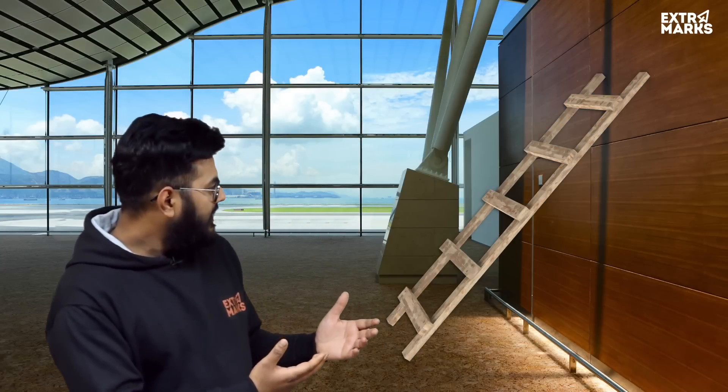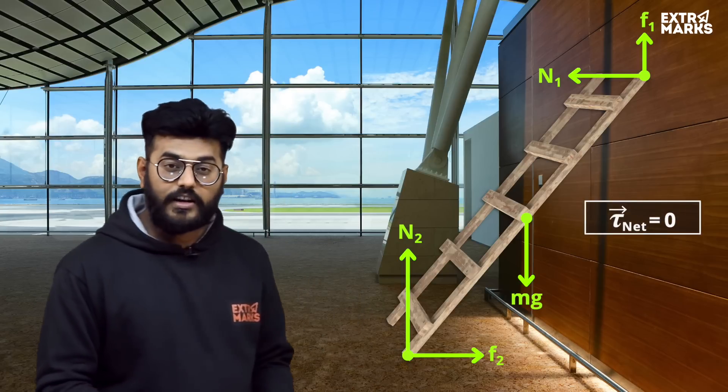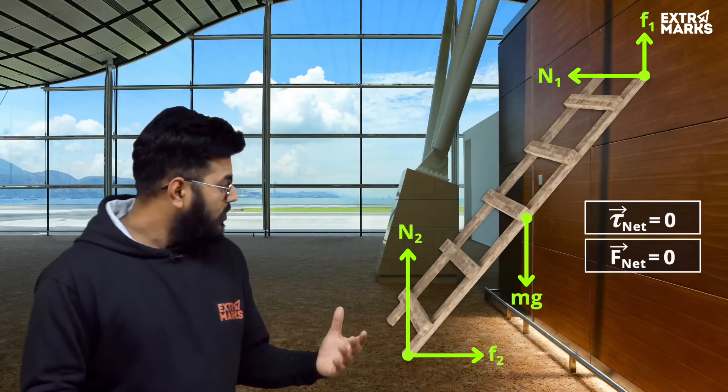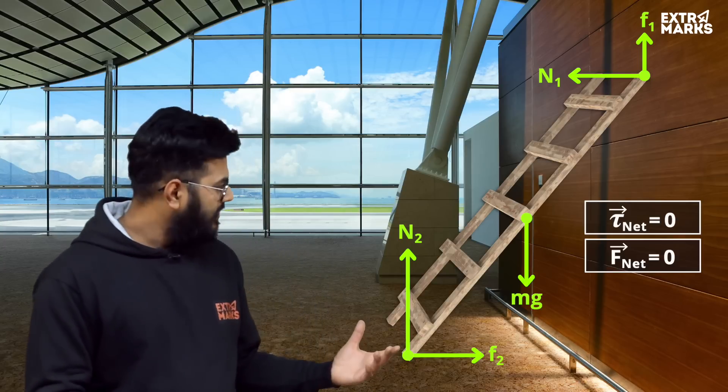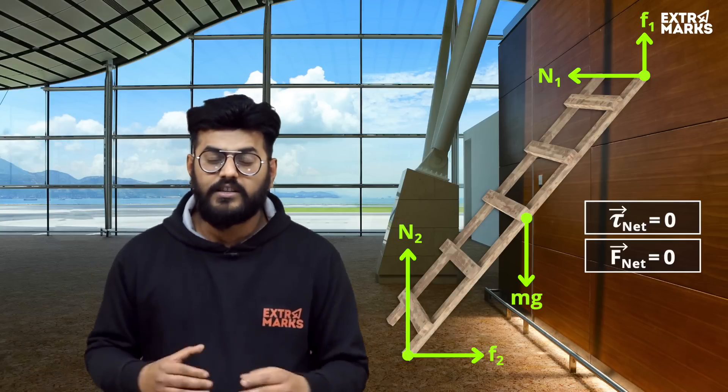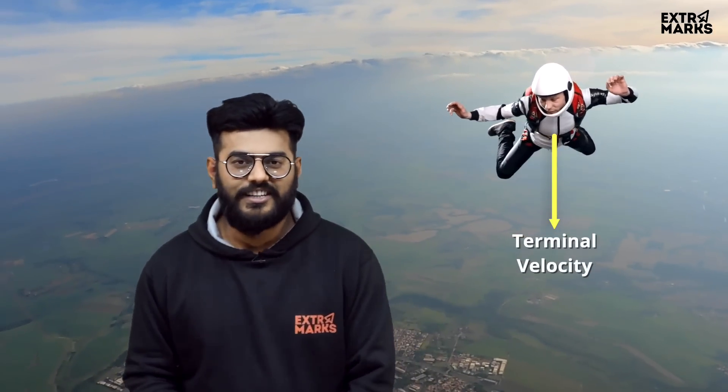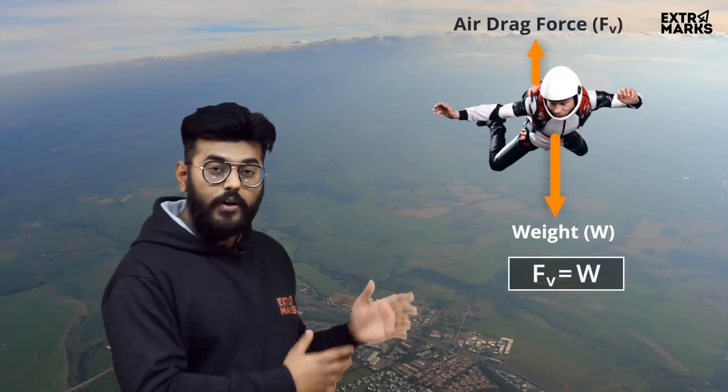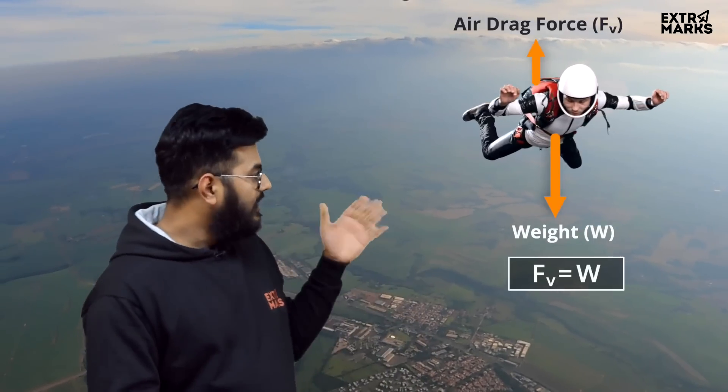Consider some examples of equilibrium. This ladder is peacefully aligning itself with the help of two walls — the net torque and net forces amount to zero, so the ladder is in static equilibrium. Now consider a person who is skydiving. We'd expect his velocity to keep increasing due to his weight, but after a particular time his velocity becomes constant and equal to the terminal velocity. The reason is that the net forces and net torque acting on the body amount to zero — this is a case of dynamic equilibrium.